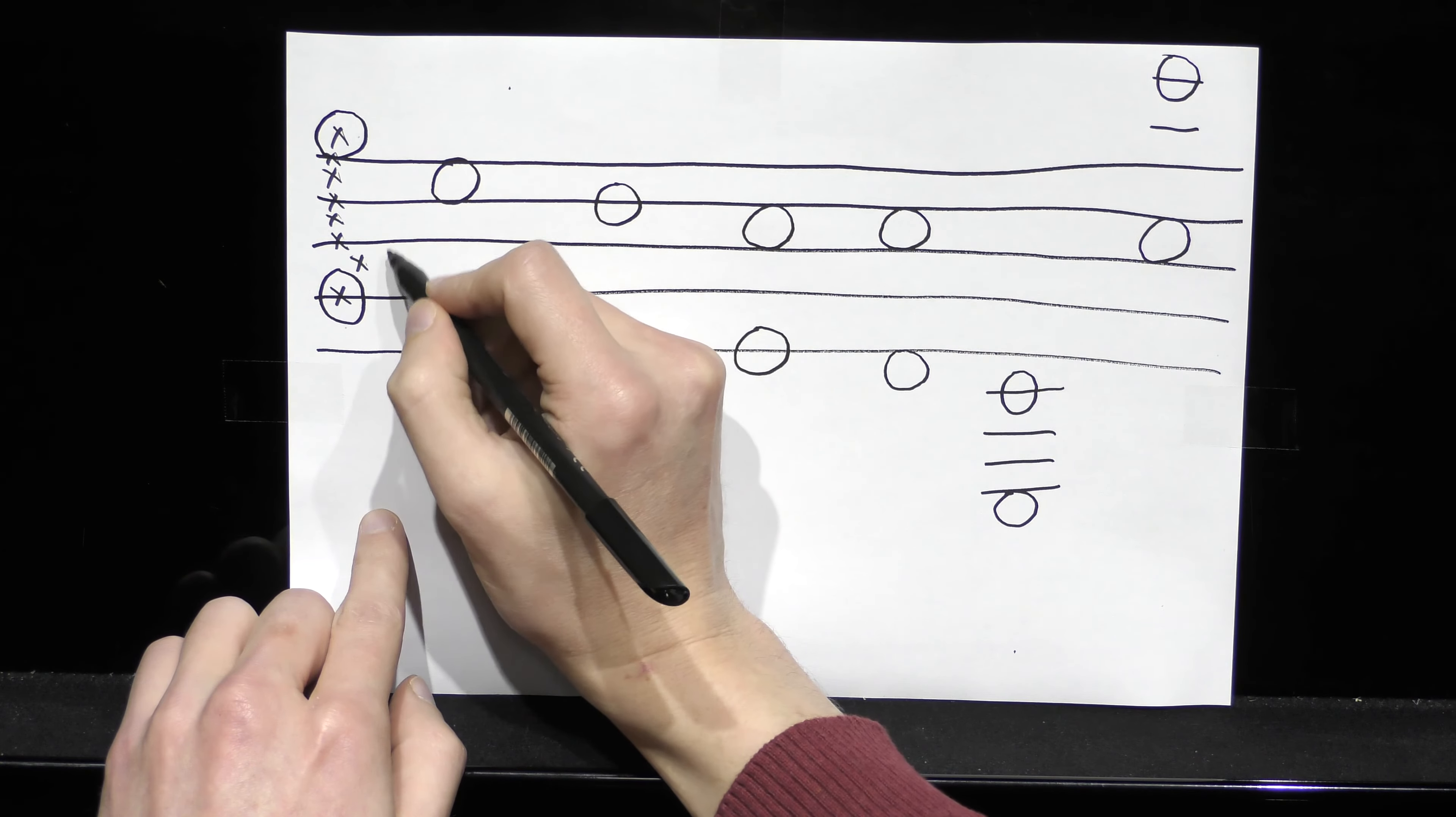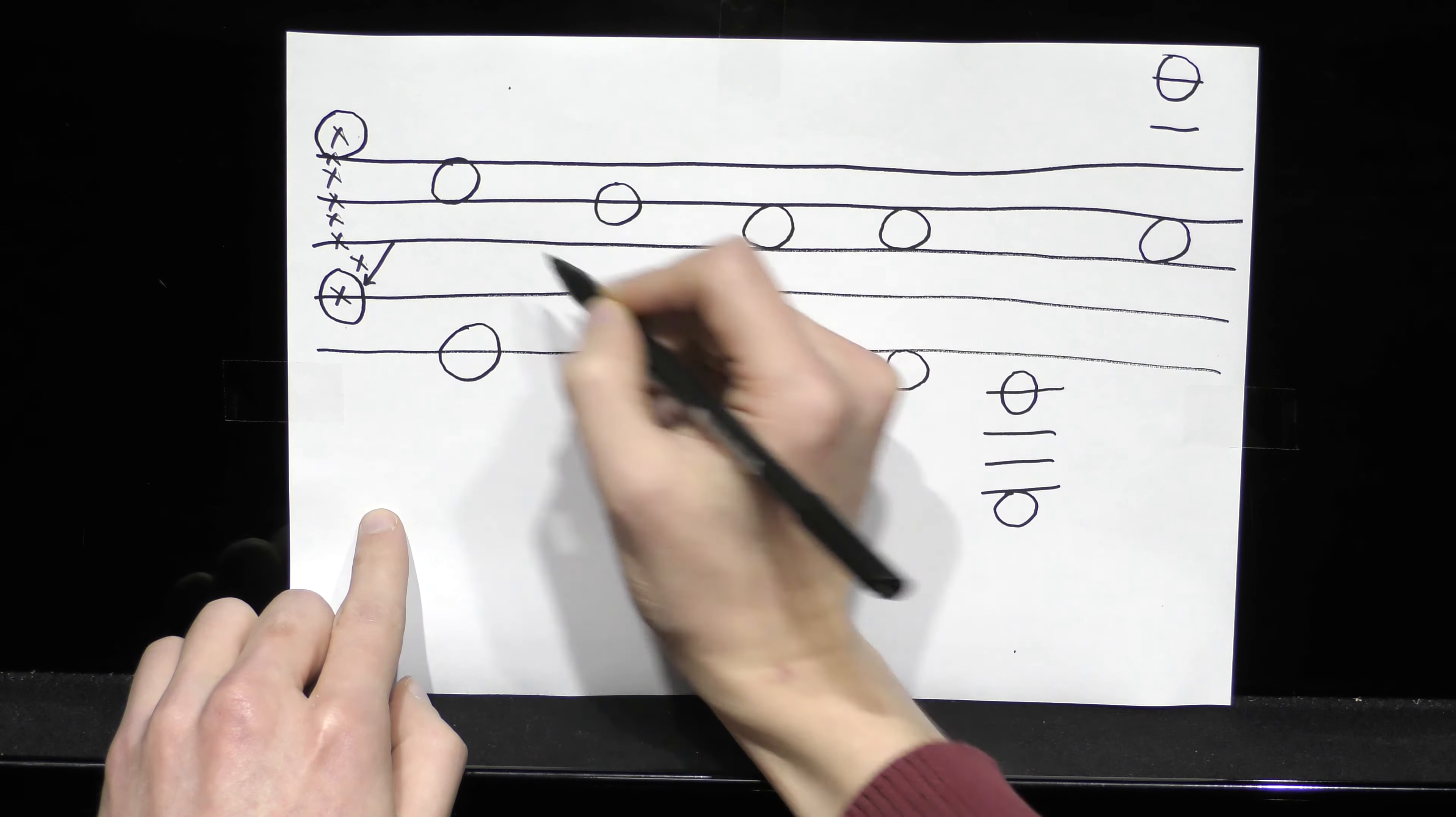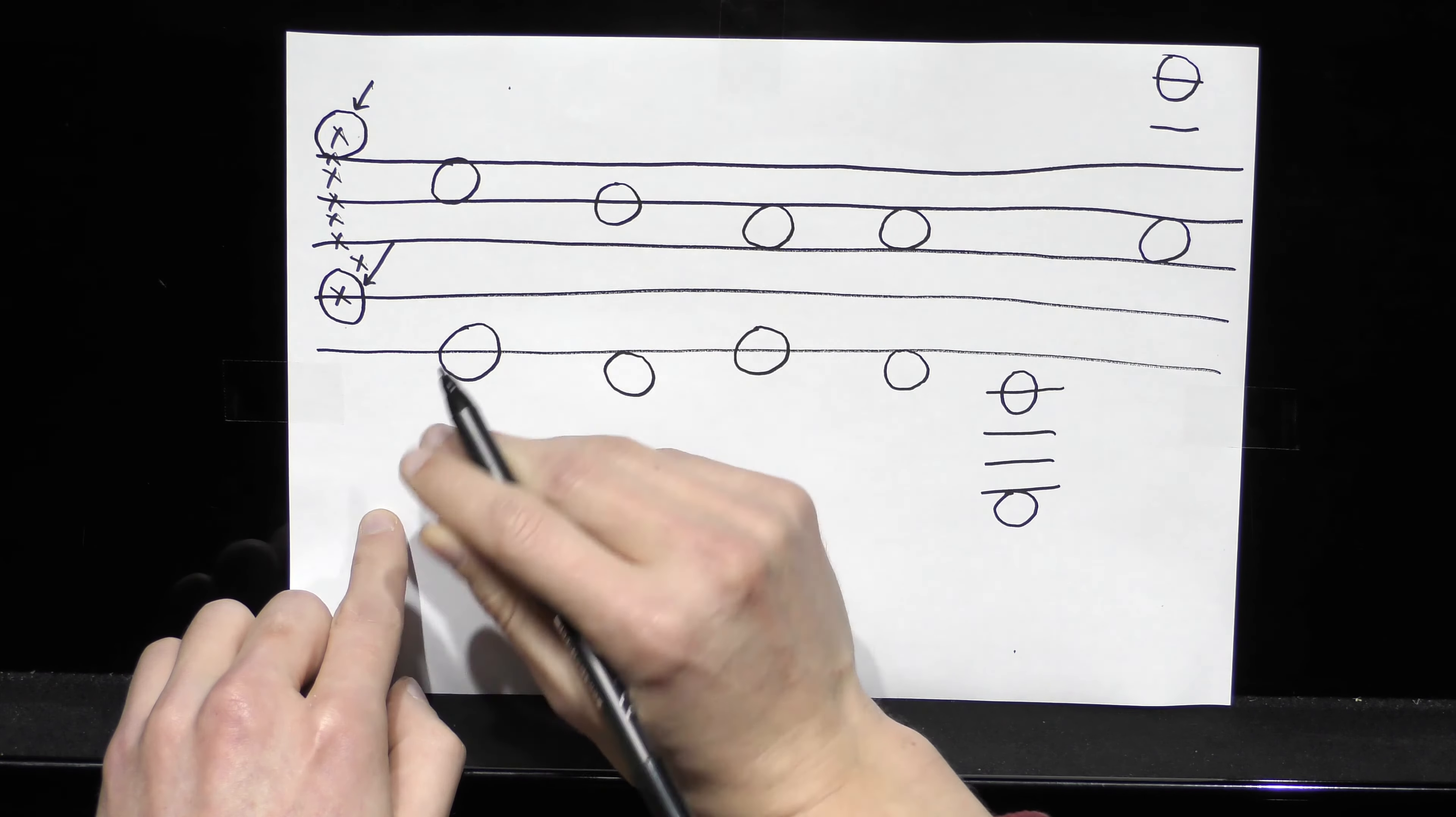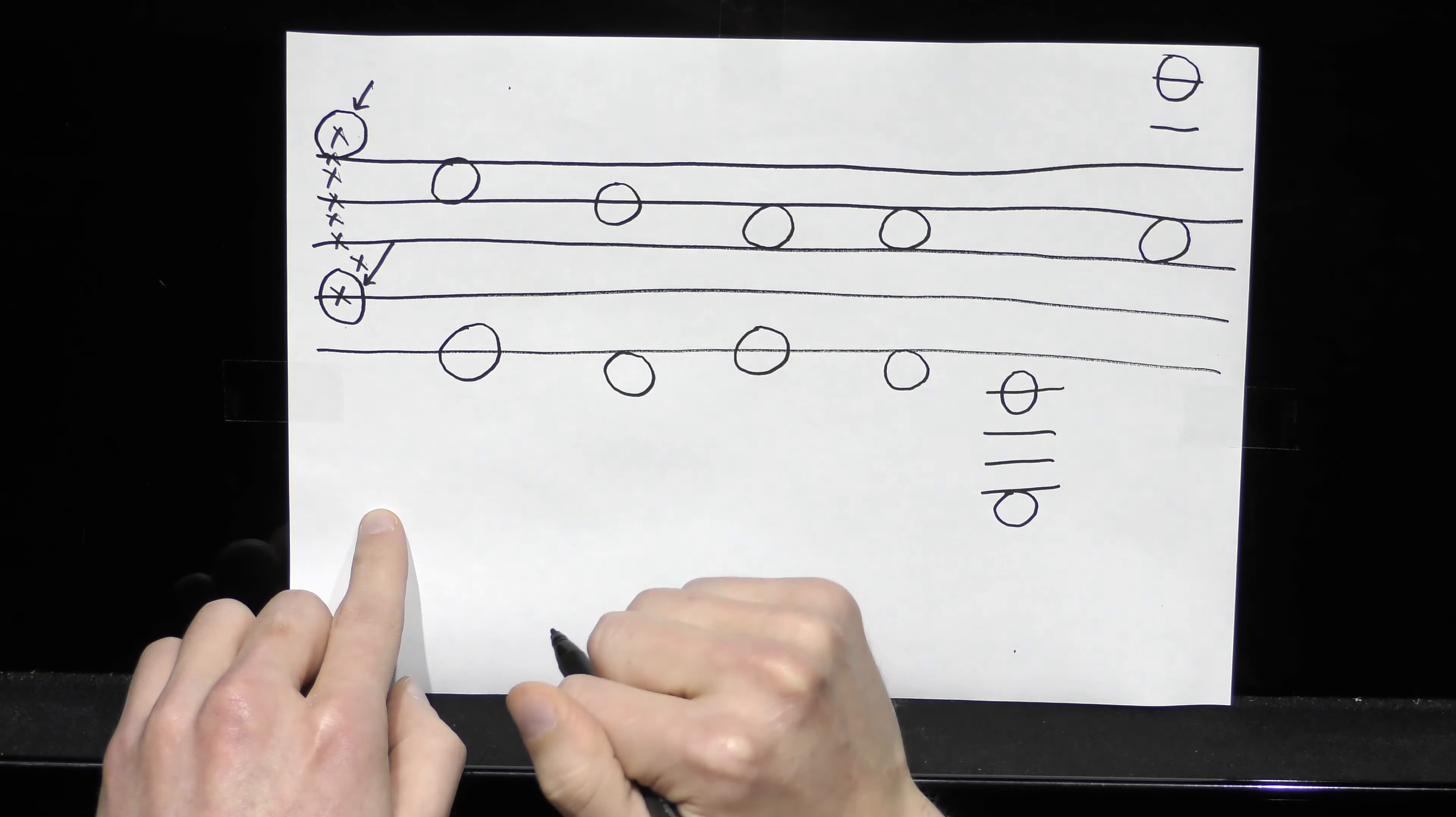If we look at our example here, we have one note on a line and one note on a space. And it turns out that will always be the case for an octave. So that's the one thing you need to remember.